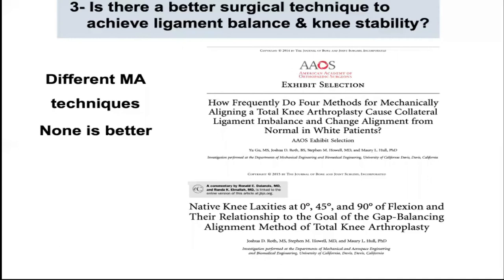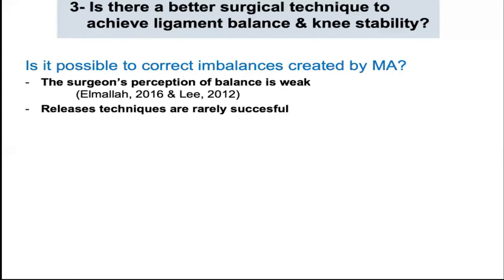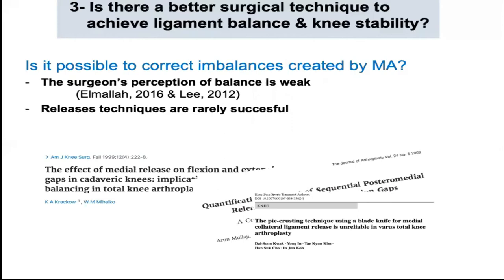Now we'll move to our third question: is there a better surgical technique to achieve ligament balance and knee stability? As shown by these studies, whatever technique we use to perform mechanical alignment, the anatomical changes resulting from the predefined goal of neutral femoral and tibial cuts are related to instability. Several release techniques were described to correct the knee imbalances created by mechanical alignment. Without special instruments, the surgeon's perception of balance depends on surgical training, experience, and skills, but also on patient factors like BMI, gender, or comorbidities. Precision tools such as computer navigation may be helpful. However, many reports suggested that ligament release is unpredictable and may result in over-release and instability.